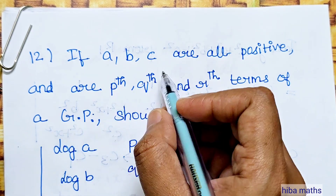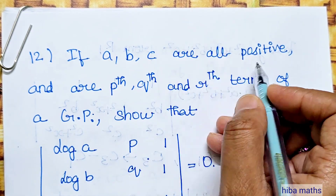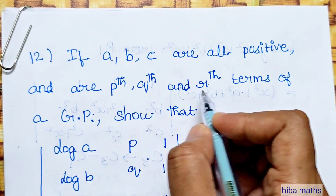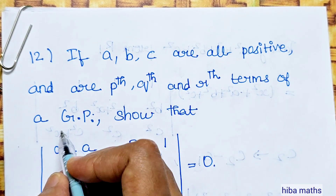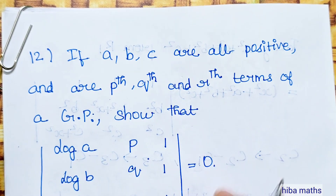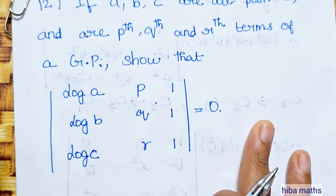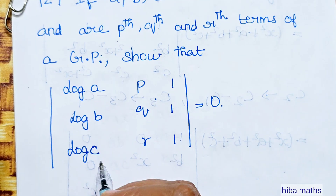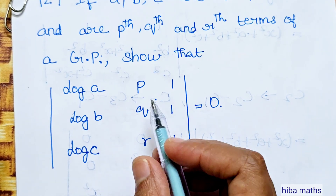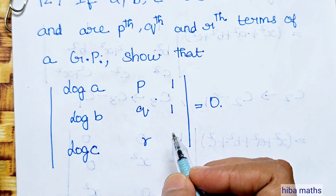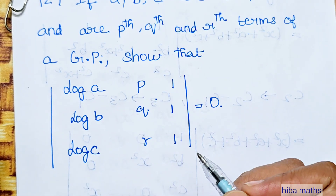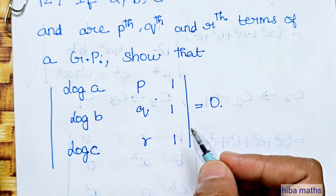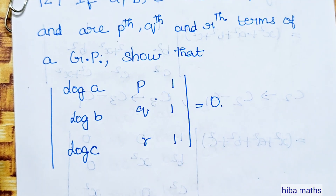If A, B, C are all positive and P, Q, R are terms of a GP, show that the determinant with entries log A, log B, log C in the first row; P, Q, R in the second row; and 1, 1, 1 in the third row is equal to 0. So, in the matrix the value is 0 — let's prove it.